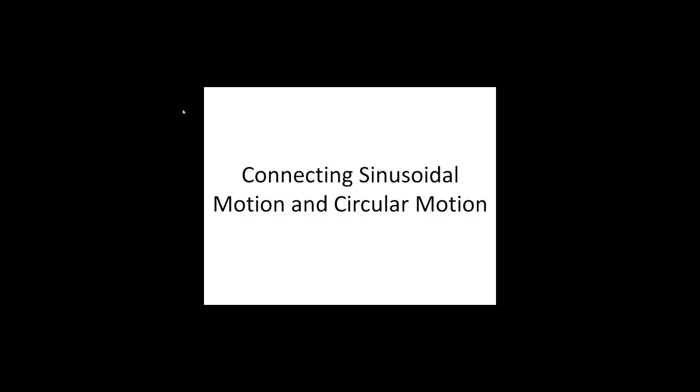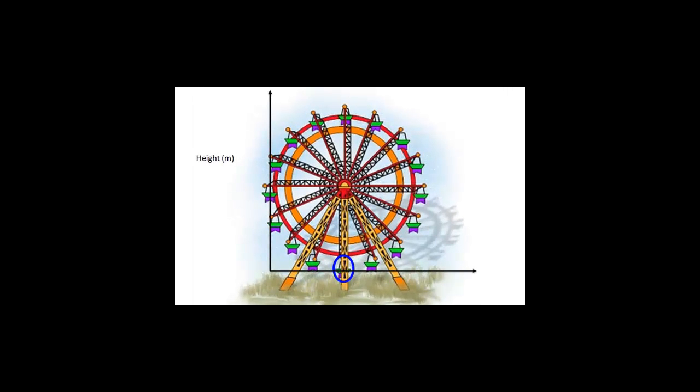We can also connect sinusoidal motion to circular motion. When a particle traverses a circular path, the x and y components of its motion are sinusoidal. You may remember a similar explanation when you learned about the unit circle in trigonometry. Let's think about the motion of the ferris wheel again. When we trace out our height as we ride the ferris wheel, we are considering the y component of our motion. If we also kept track of the x component — say, our shadow on the ground and its distance from the far left edge of the ferris wheel — we would also see that it is sinusoidal.